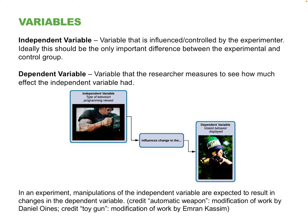Here are two more terms that look almost the same: independent and dependent variable. These terms only apply to experiments. The independent variable is whatever is being controlled and manipulated by the experimenter — in this case, the ginkgo biloba pill. The independent variable is almost always going to be some sort of treatment or the new thing being tested in an experiment.